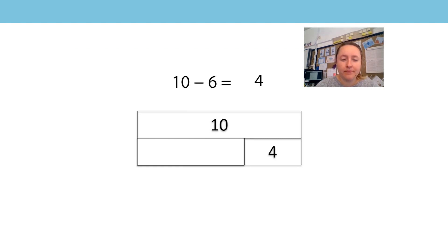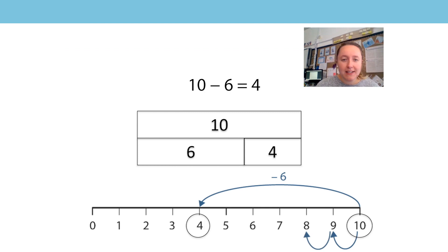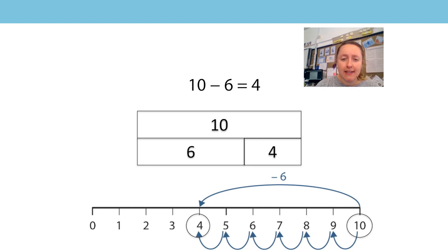Our bar model is very clever because we can cover up 6, which leaves us with 4, so 10 subtract 6 is equal to 4. But if we cover up the 4, then 10 subtract 4 is equal to 6. We don't need to count back to subtract from 10 because we can use our knowledge of pairs of numbers that sum to 10. It's not just about getting to the answer — it's about making connections and using what you know.